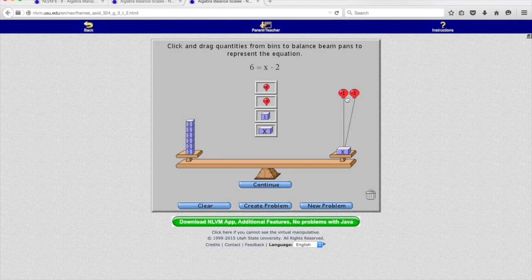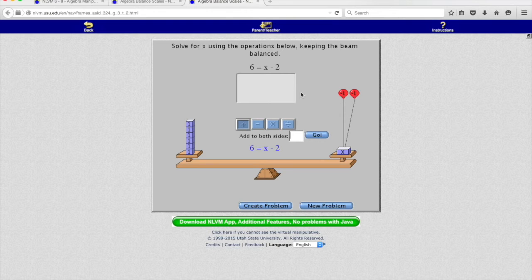So what we're going to do is to counteract that, we're going to add 2 blocks to both sides. So by adding two blocks to this side, the effect of the two balloons will cancel out, and then as long as I do it to the other side, I should be fine. So let's click go.